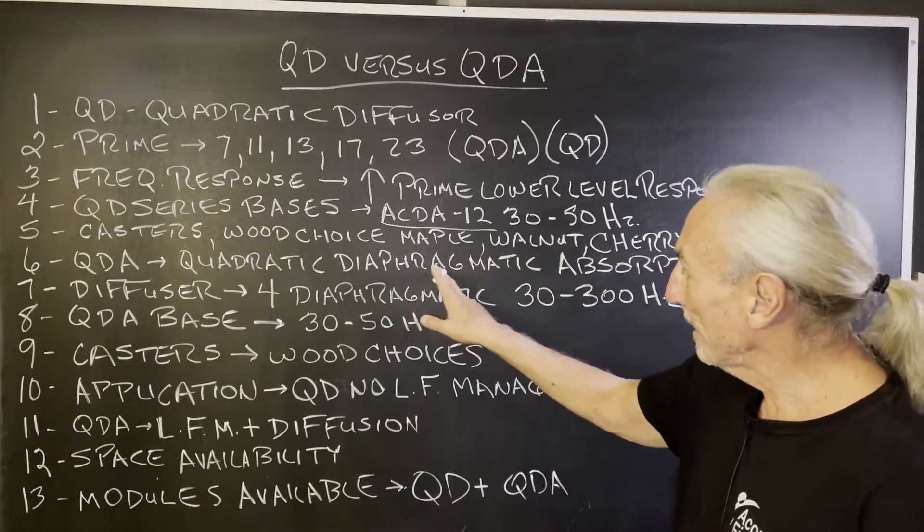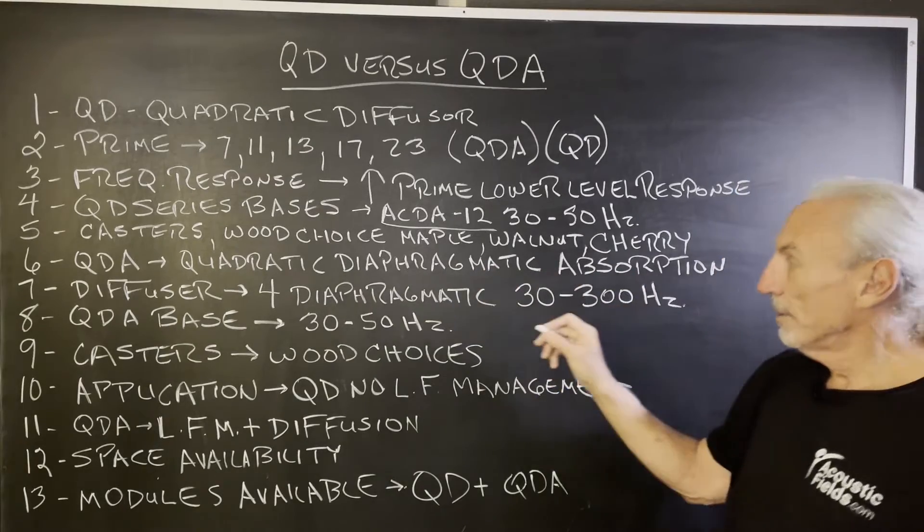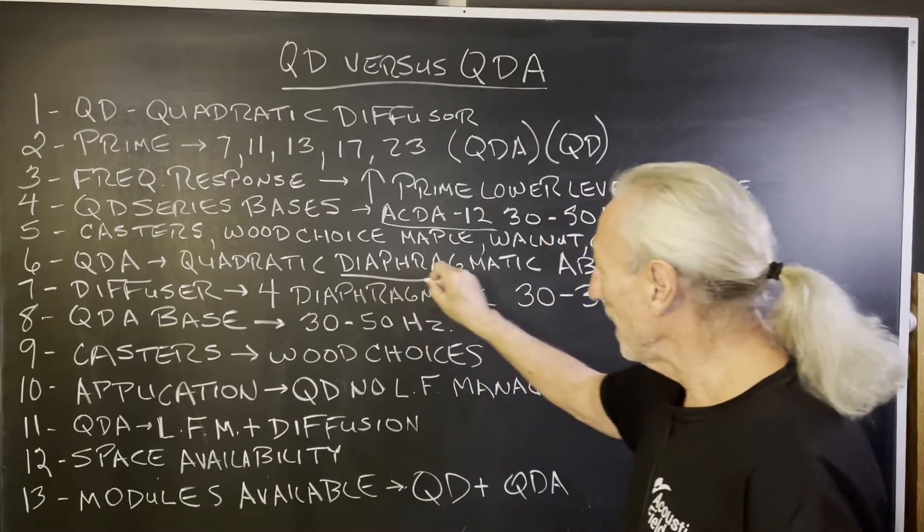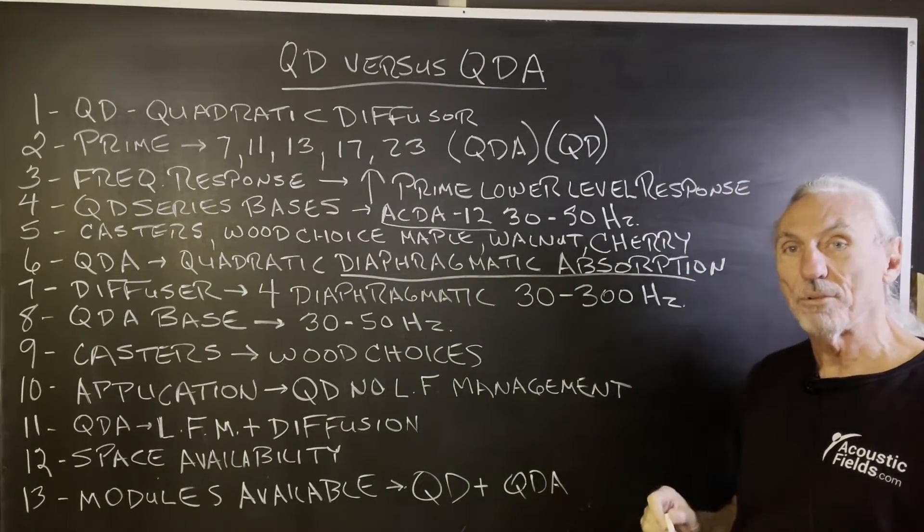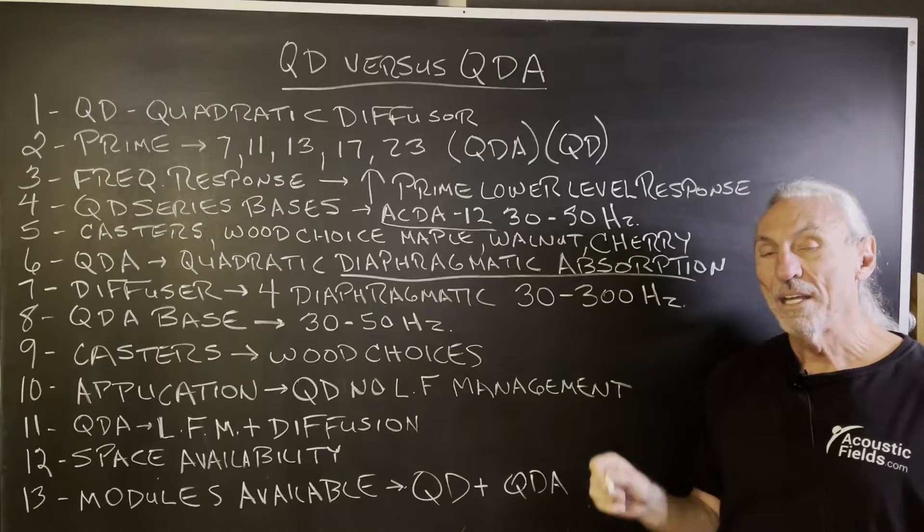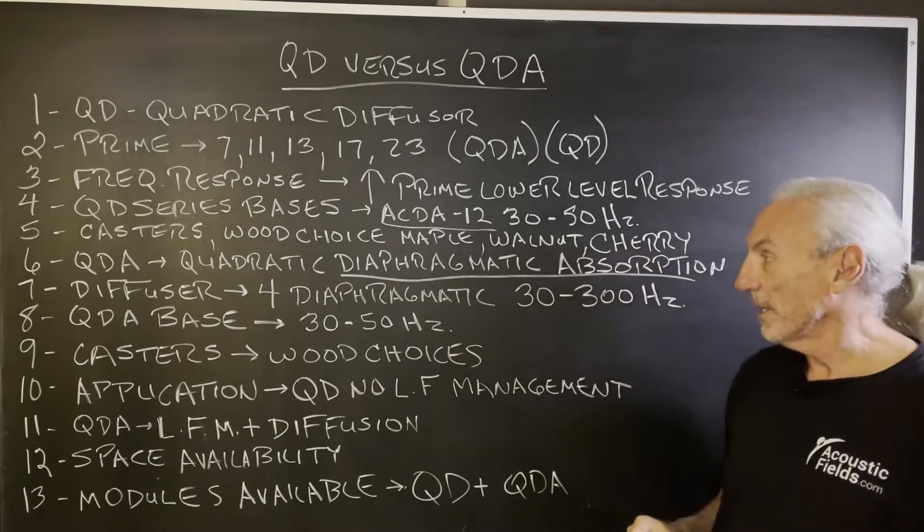QDA, quadratic diaphragmatic absorber. So the big difference between the QD and the QDA is that inside the QDA, we have our ACDA10 and our ACDA12 technology.